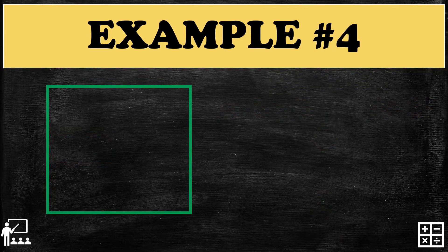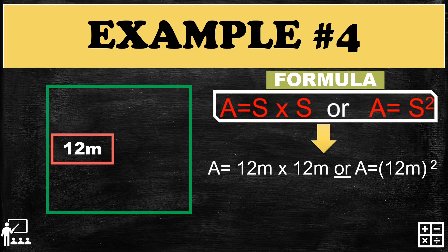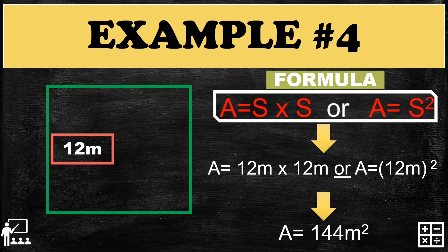Now a square has a side of 12 meters. We use the formula A equals S times S, substituting the measurement of the side. So 12 times 12 gives you 144. The answer is 144 meters squared.